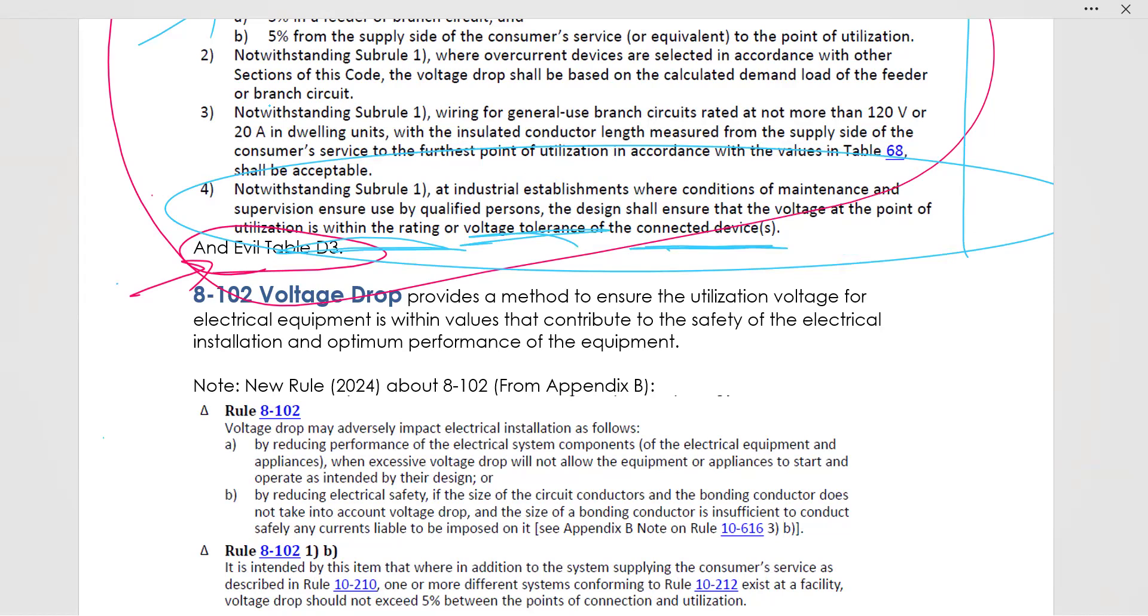So this says that, yes, subrule 1 is happening, but also the tolerances will be watched for by the supervision at the industrial facility. So that's what the actual rules are talking about for 8.102. And you should really have a good understanding. Watch this a couple of times to get a good understanding.